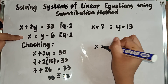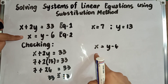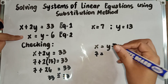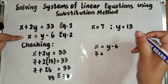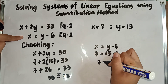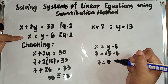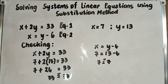Now checking equation 2: x is equal to y minus 6. Substituting x equals 7 and y equals 13: 7 is equal to 13 minus 6, which gives 7 equals 7. So our answer is correct. That's how we check.